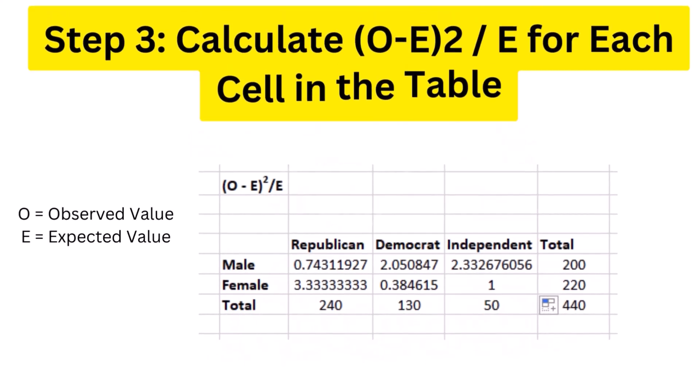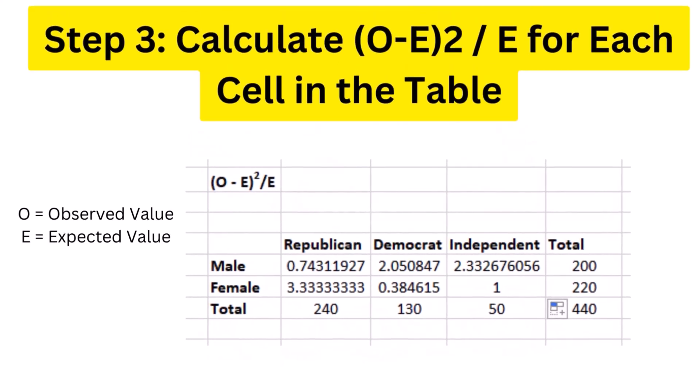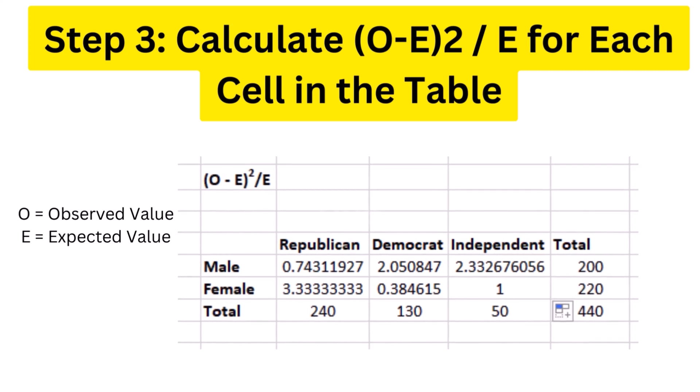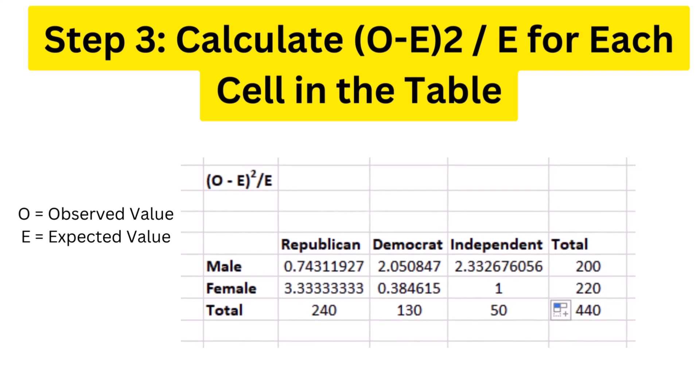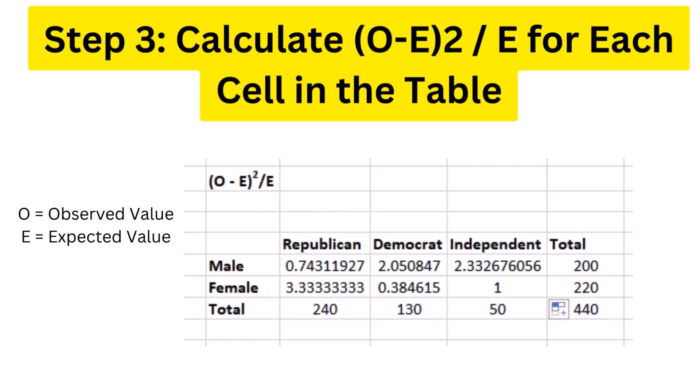Step 3, calculate O-E for each cell in the table. Now you will calculate the O-E for each cell in the table, where O equals observed value, E equals expected value.